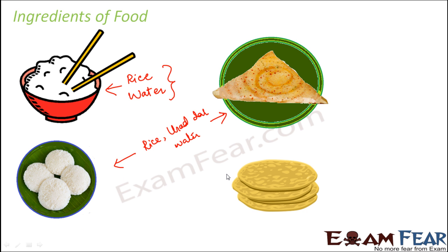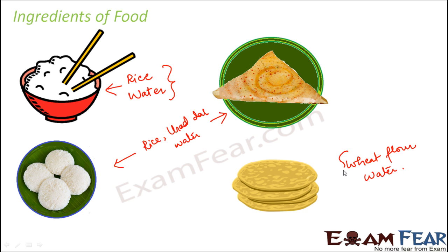When you talk about chapati or roti, you need flour — maybe wheat flour or maida — and some water. Then you bake it on the oven, and that gives you the chapati. So in all of these items, the ingredients are quite simple. You just need one or two things and you are able to prepare these food items. However, a lot of food items have multiple ingredients — a quite complex composition — and you need a lot of things to prepare them.